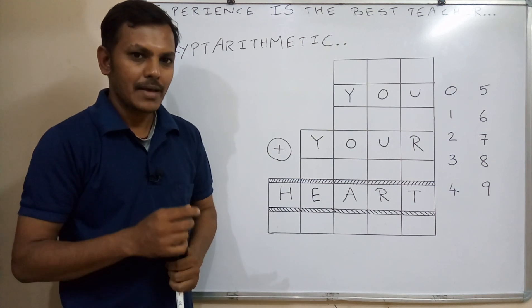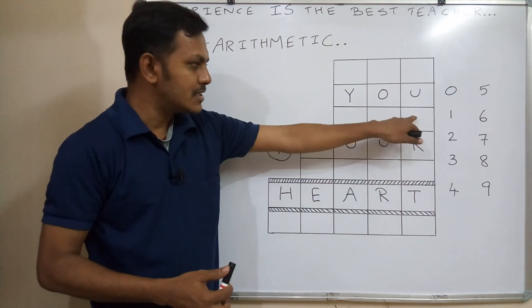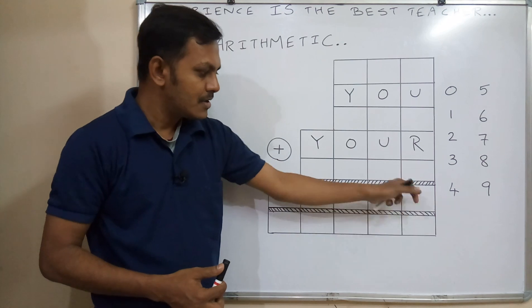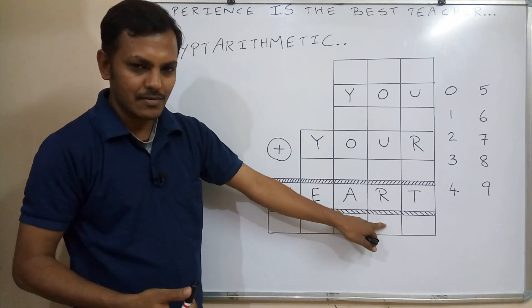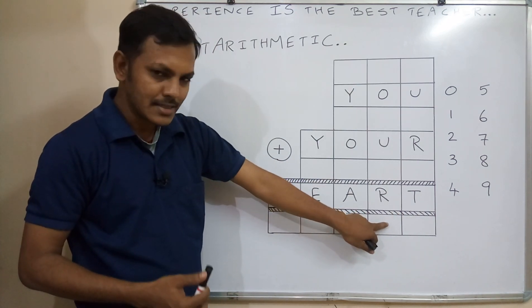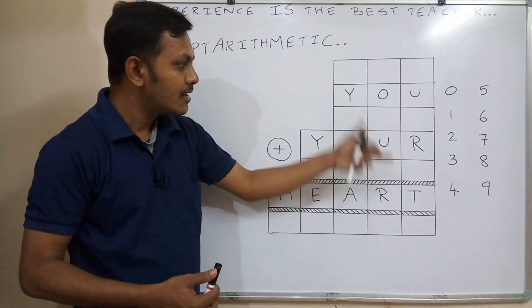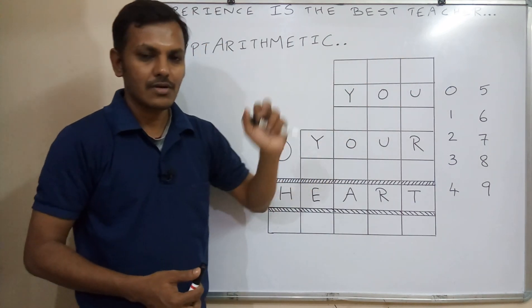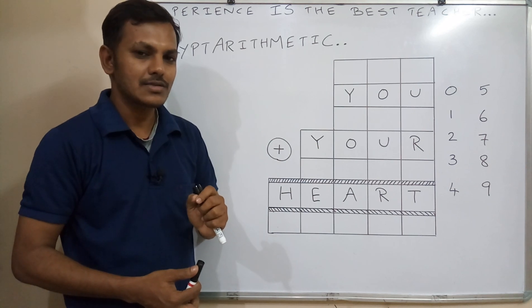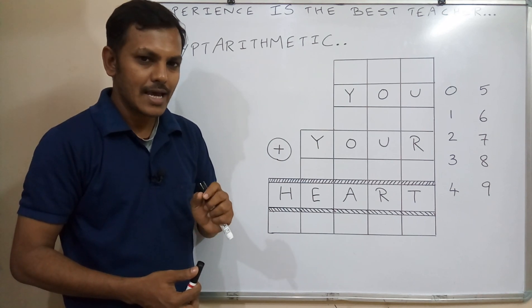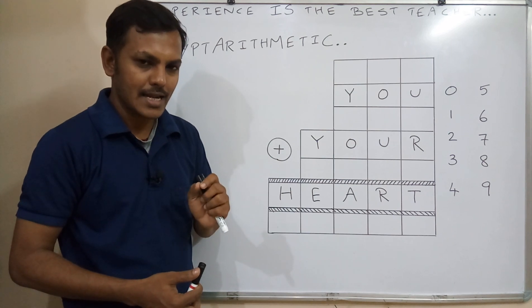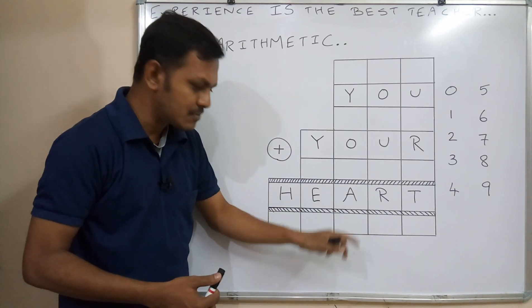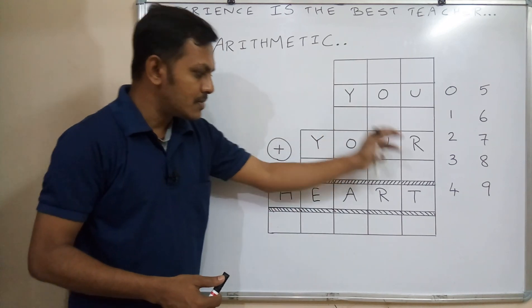What is the maximum carry-over? Maximum carry-over means when adding 2 numbers, at maximum we will get only 19. Here we will get only 18, sometimes 19. So this box will get only a maximum of 19 — you write the 9 here and the carry-over goes there. That is the maximum carry-over. Getting 20 and above in this box is not at all possible.